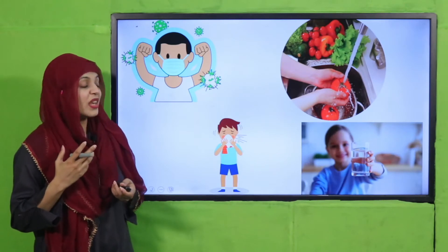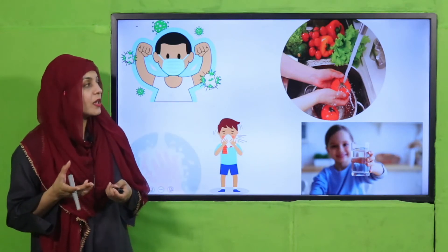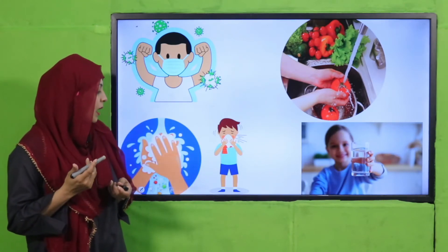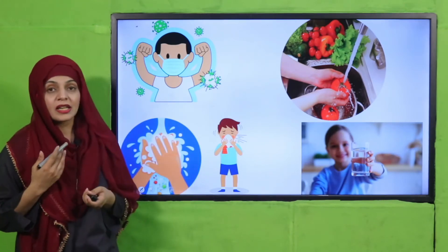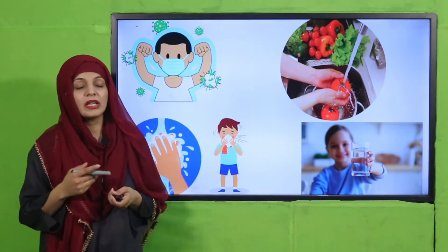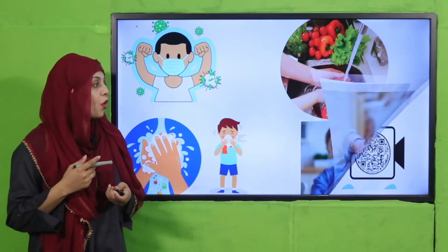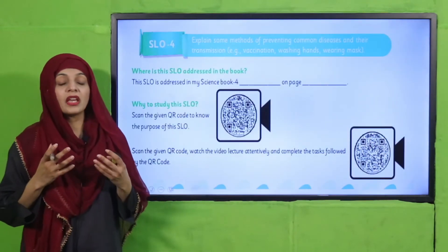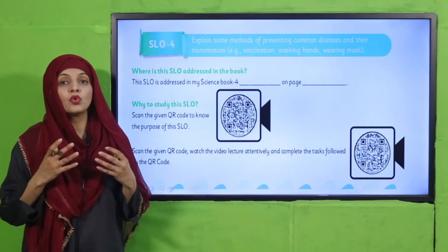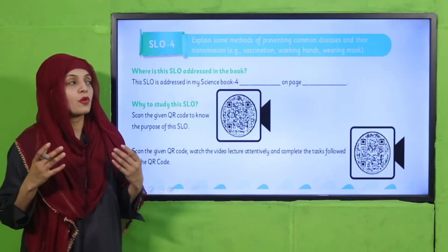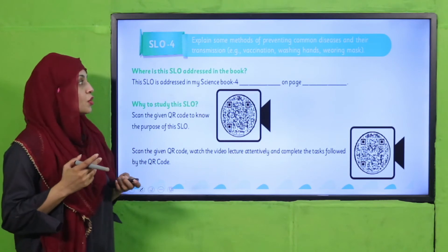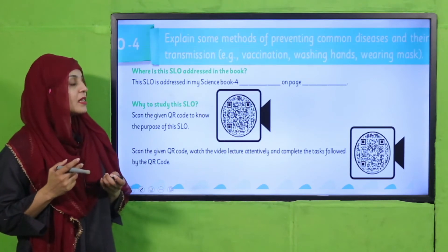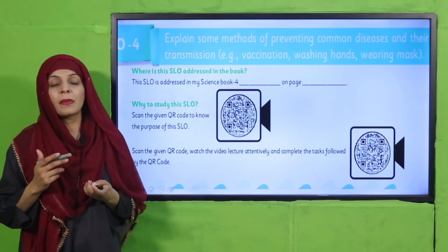Other preventive measures include bathing, drinking clean water, and washing their hands very frequently. These are all things they can do to prevent themselves from diseases. Read the SLO carefully.